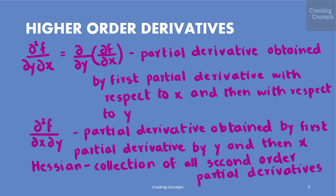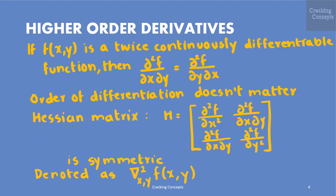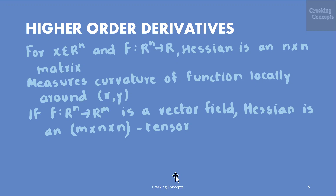The Hessian is the collection of all second order partial derivatives. If f(x,y) is a twice continuously differentiable function, then ∂²f/∂x∂y equals ∂²f/∂y∂x — that is, the order of differentiation does not matter. The corresponding Hessian matrix H is an n×n matrix for f mapping from n-dimensional space to one-dimensional space.